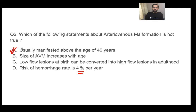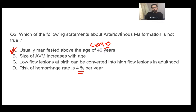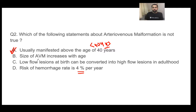The correct answer is A — 'usually manifested above the age of 40 years' is false. Arteriovenous malformation is usually manifested below 40 years of age, typically around 20-30 years. It is a congenital anomaly with a communication between artery and vein, present since birth, and as the child grows, the size of the AVM tends to increase.